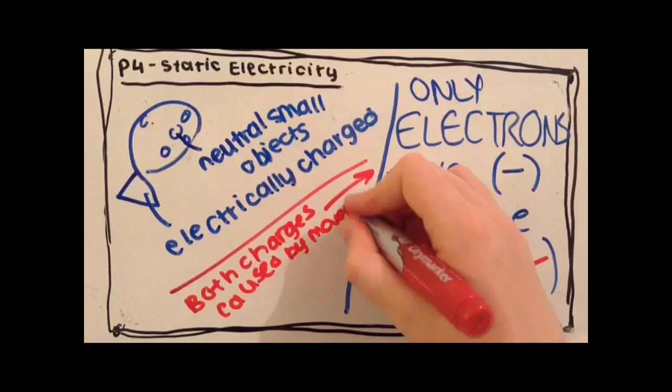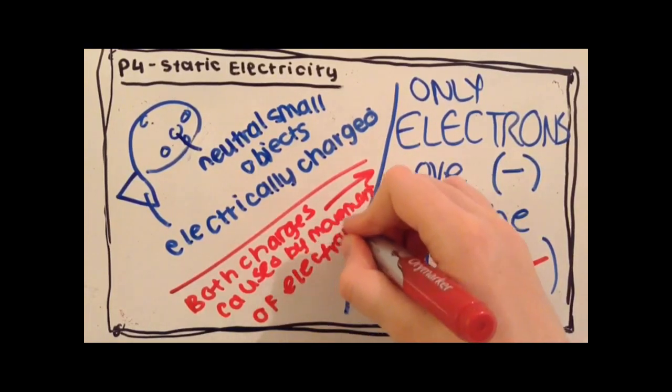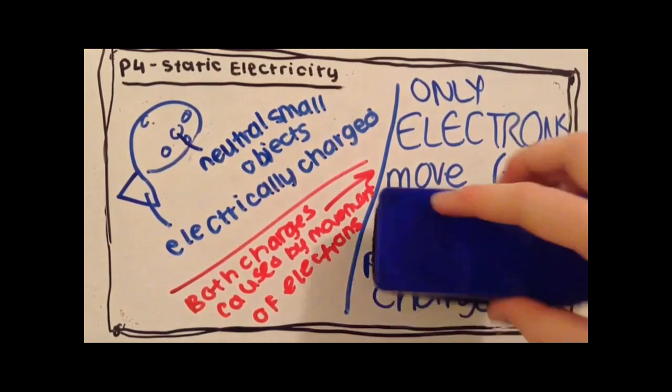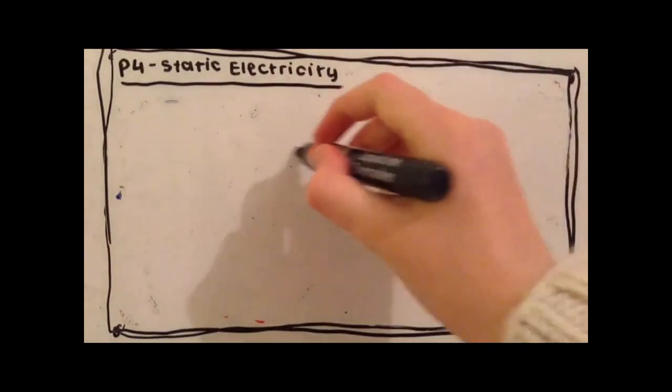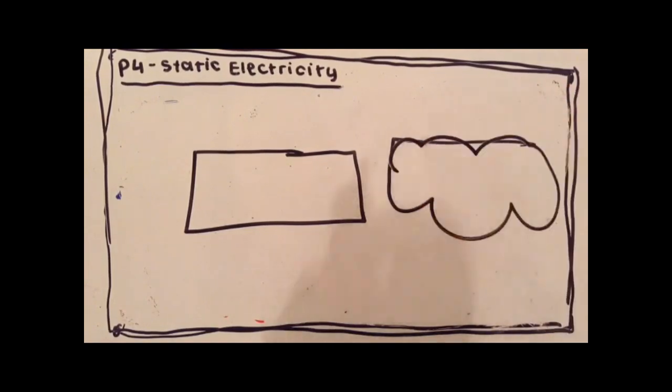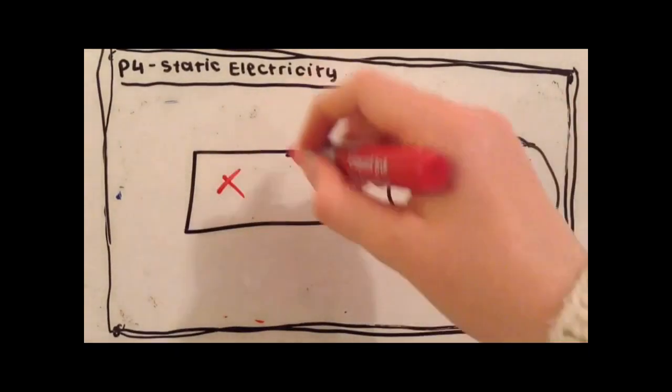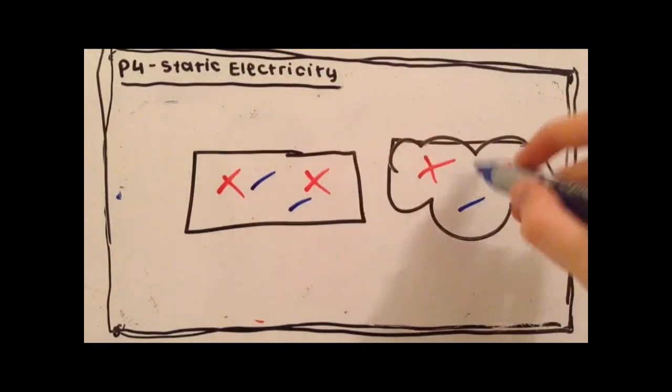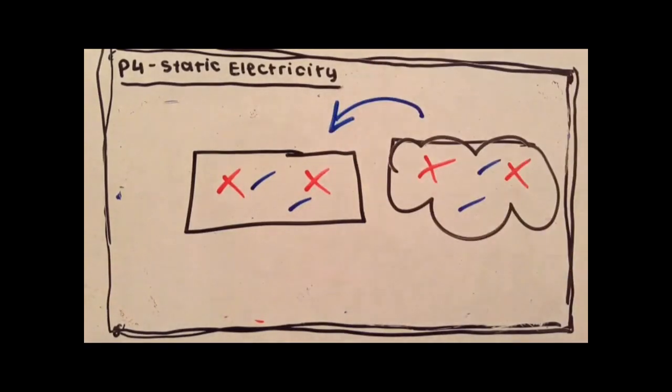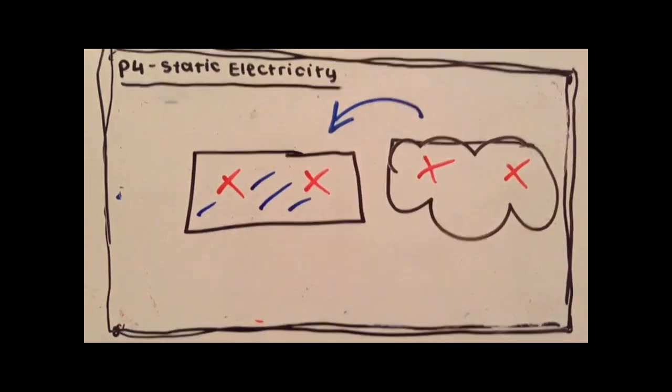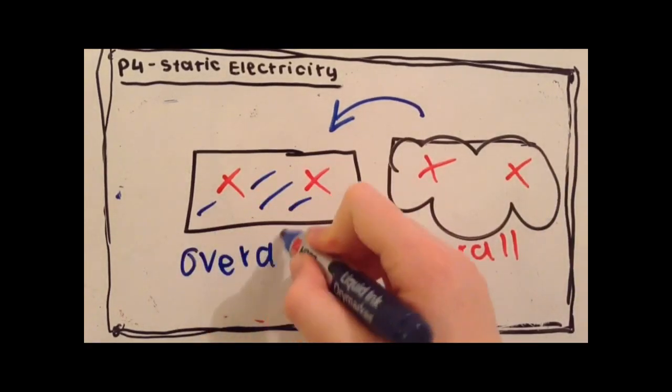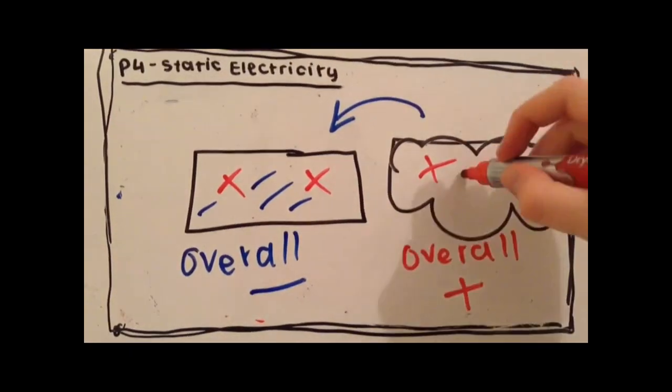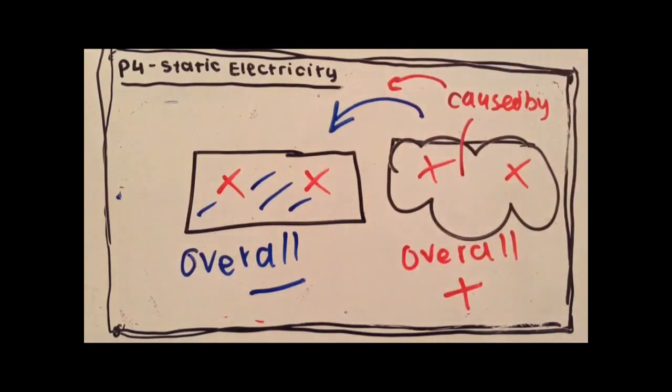Both positive and negative electrostatic charges are caused by the movement of electrons. The positives are caused by electrons moving away elsewhere. This can be shown in the diagram where the electrons have moved, leaving the object on the right with an overall positive charge and the object on the left with an overall negative charge.